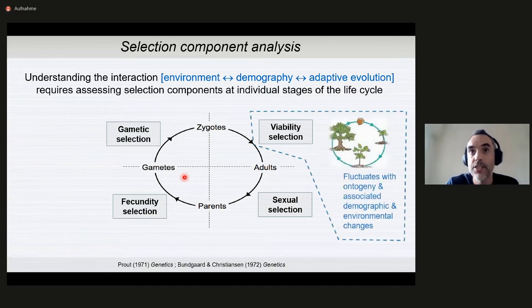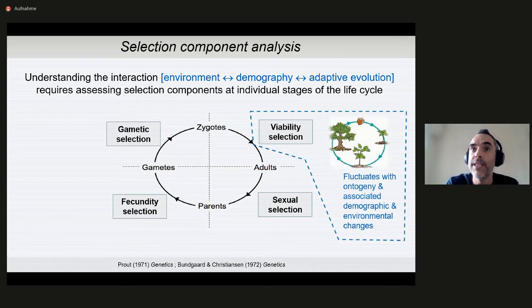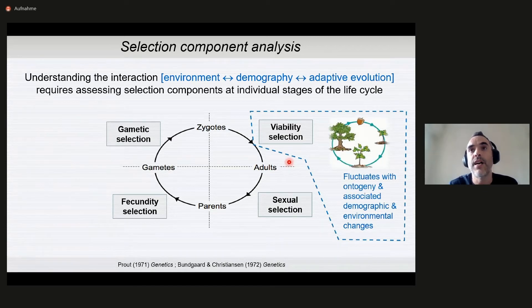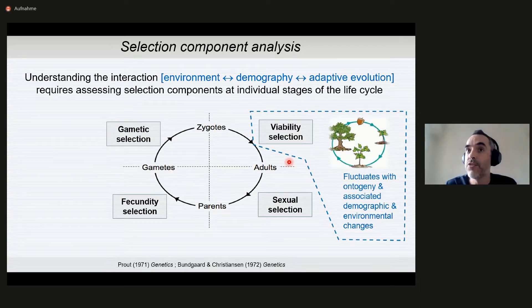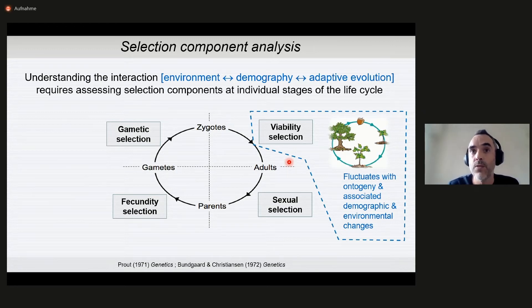In this talk, we are focusing on viability selection, which is selection affecting survival probability from the zygotic to the adult group stages. As you can imagine in trees, this is a period of the life cycle where there are dramatic changes in ontogeny and therefore also in selection. Typically, given the long life cycle of trees, we will also have big variation in demography and in micro and macro environmental conditions.